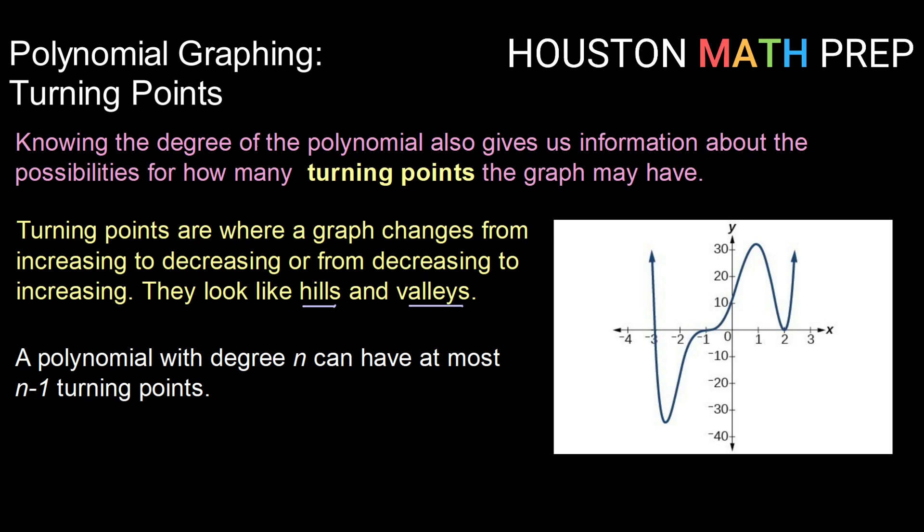Knowing the degree of our polynomial, which is our highest power of x, gives us information about the possibility of how many turning points our graph might have. There's an actual rule that says a polynomial of degree n can have at most n-1 turning points. So the maximum number of turning points for any given polynomial is 1 less than the degree.